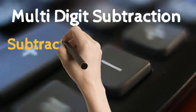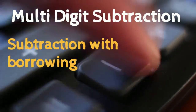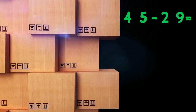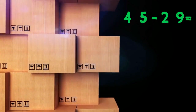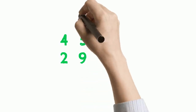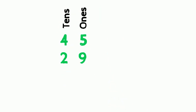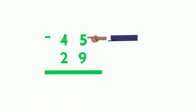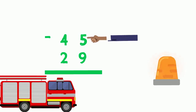Next we are going to talk about the subtraction of multi-digit numbers with borrowing or regrouping. So if we have a problem like 45 take away 29, the first thing that we need to do is to stack them up — ones places in one column and tens places in one column — and then start subtracting from the ones place. 5 take away 9: can we actually take away 9 from a 5? We can't, because 5 is smaller than 9. So if the number on top is smaller than the number at the bottom, then borrowing is the one that is coming to the rescue.